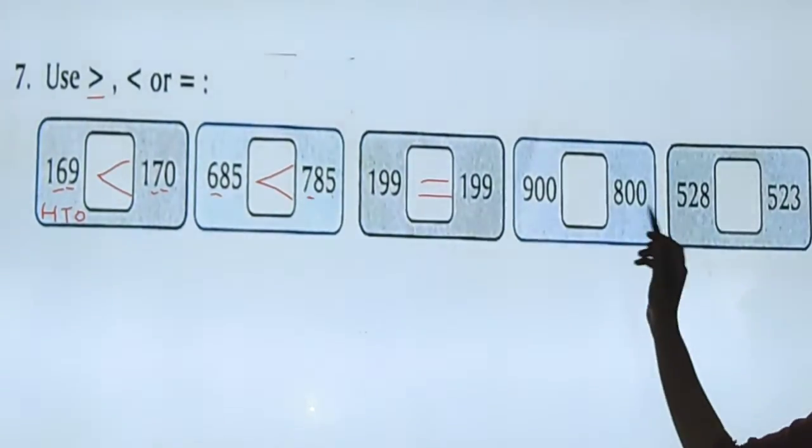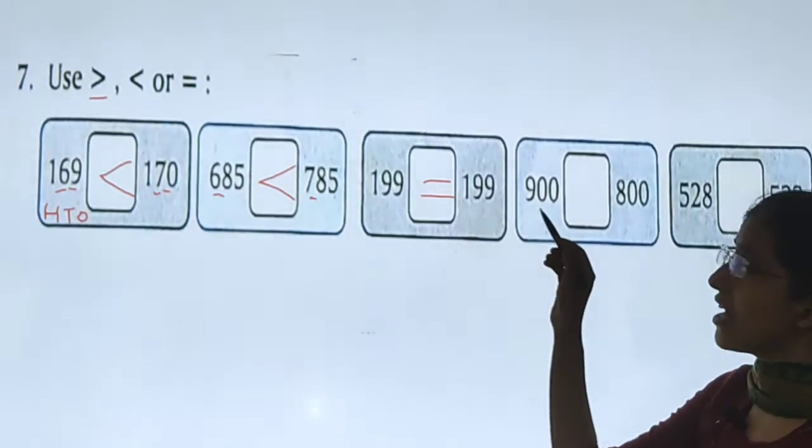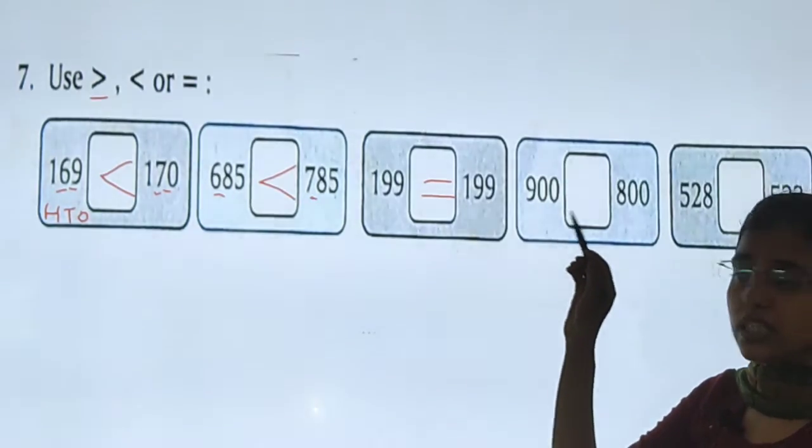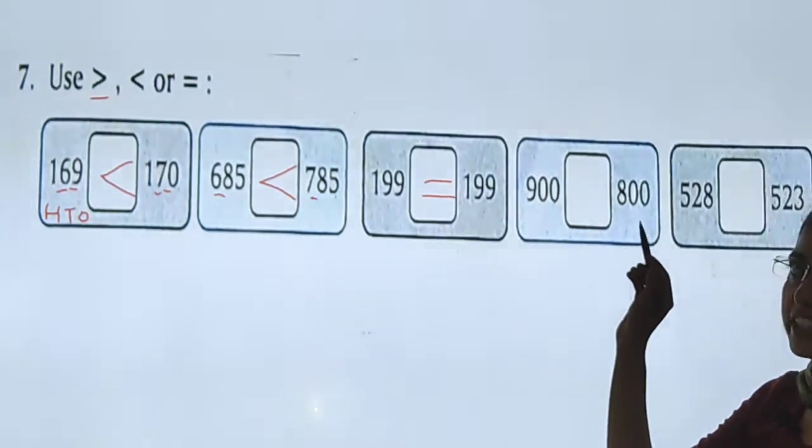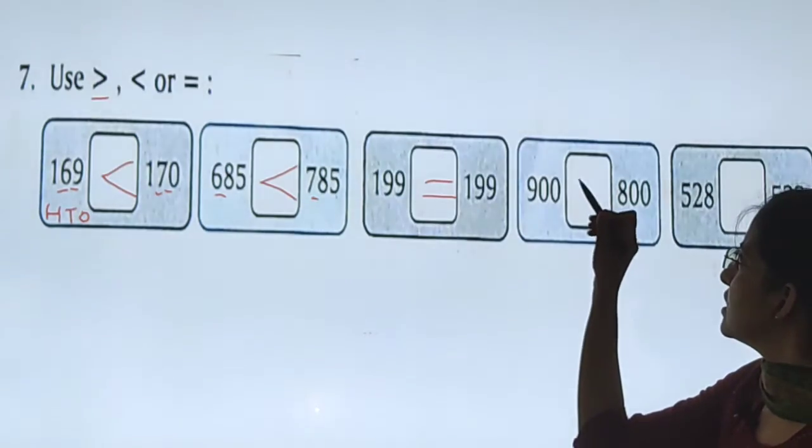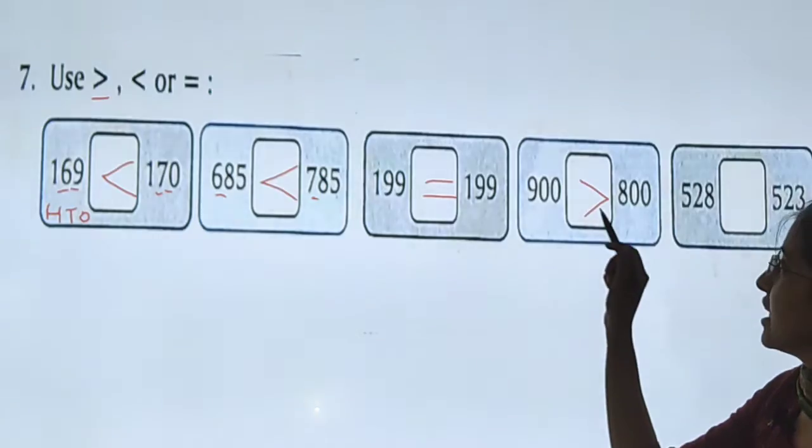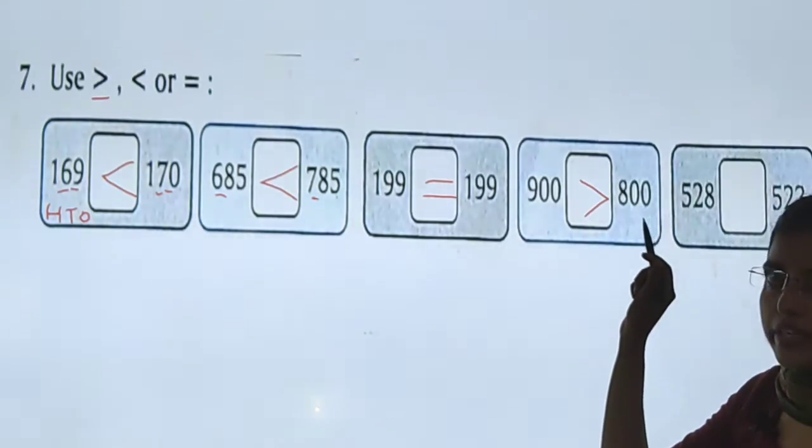Now comes 900 and 800. Now, at hundreds place, we are having 9. Here at hundreds place, we are having 8. Which is greater digit? 9 or 8? Obviously, 9. So, we will put this sign. Greater than. 900 is greater than 800.